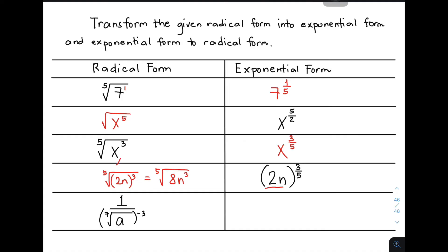Let's move on with item number 5, our last example. This one is quite complicated, but applying the law, we can do this. We have 1 over the quantity of the seventh root of a raised to negative 3. Before converting, all you need to do is make this exponent positive. So write it as the seventh root of a raised to 3. To convert this into exponential form, that is a raised to 3 over 7. That's it for item number 5. I hope you learned something from this video and now you know how to convert exponential form to radical form and vice versa.